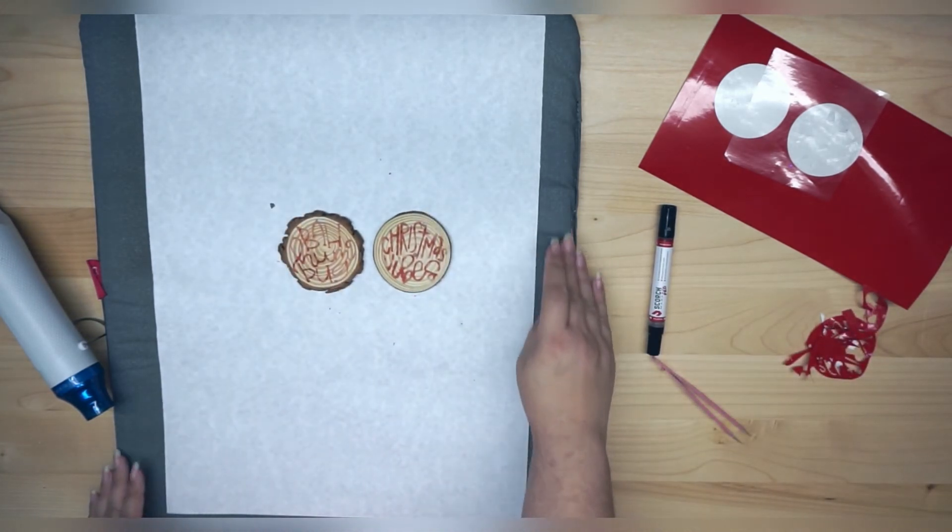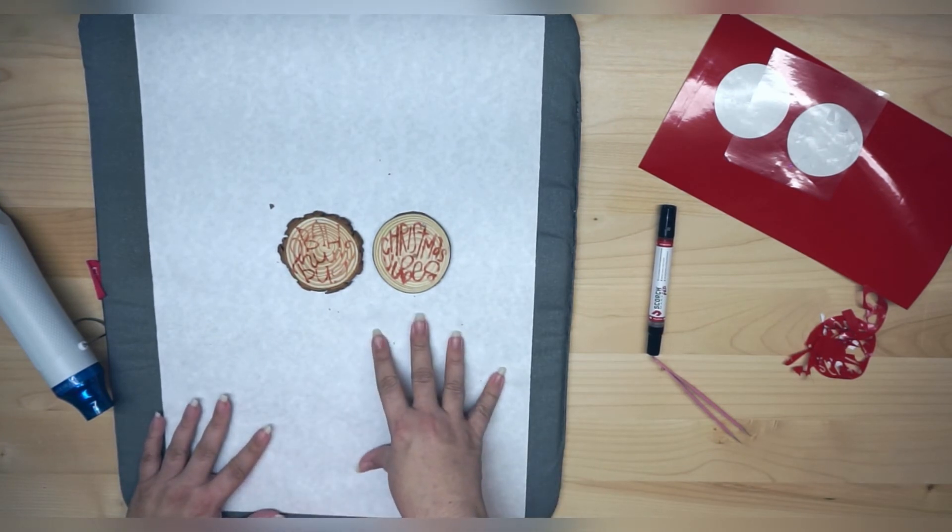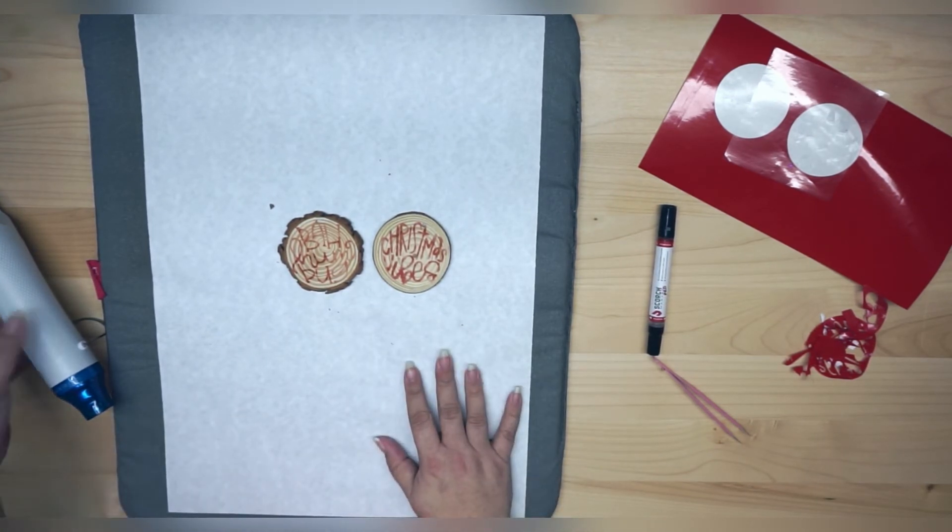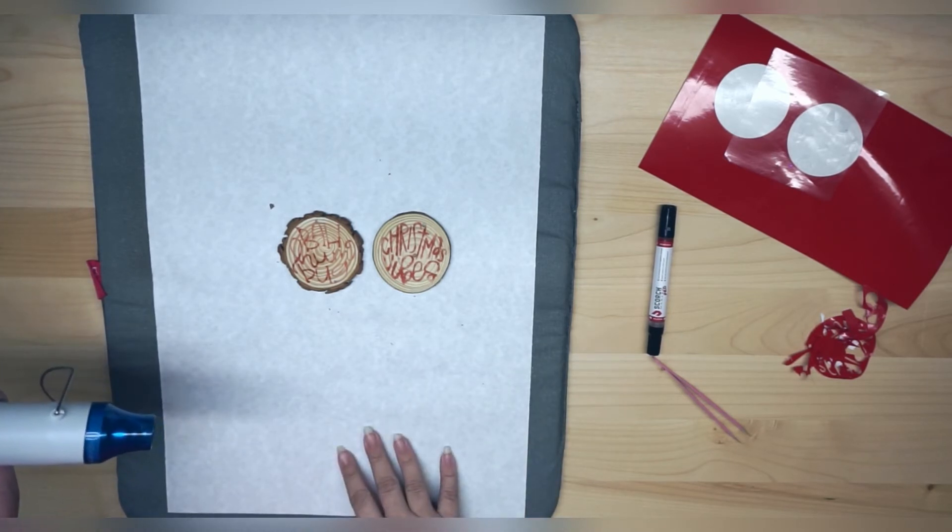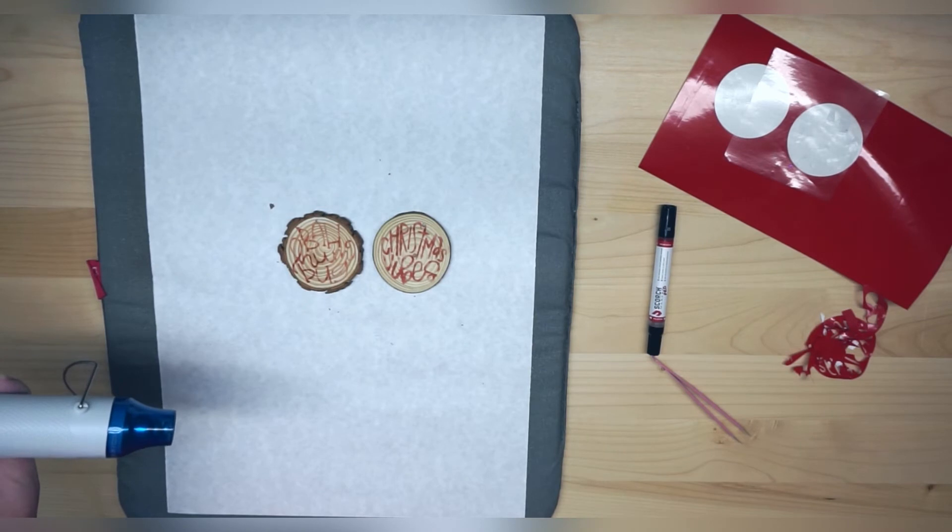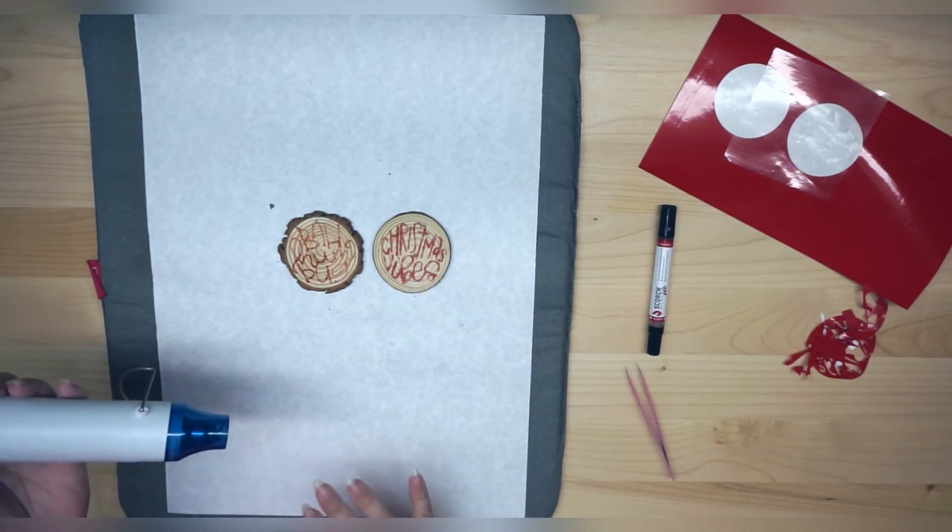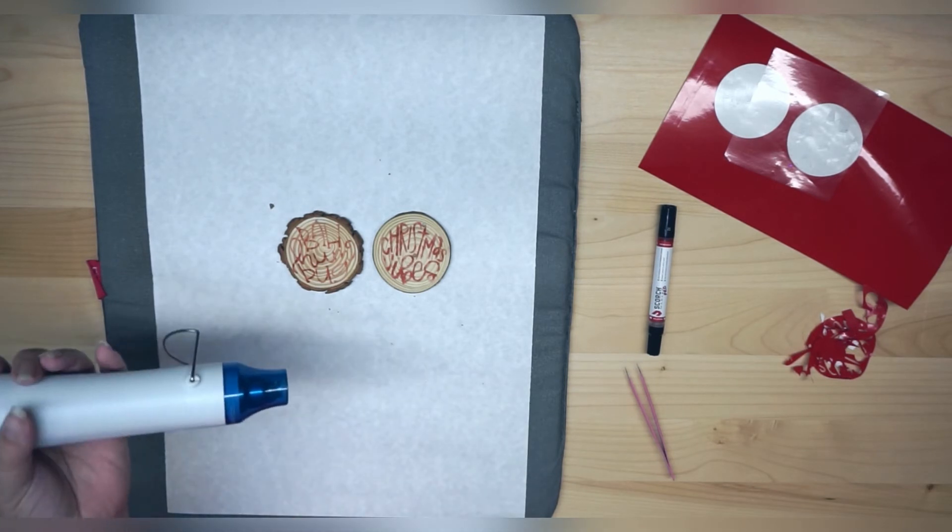All right, now I do have a heat safe mat underneath me, and butcher paper. I just... butcher paper is kind of one of my go-to things to protect my area. But because I'm applying heat, number one, I want to make sure I keep my hand out of the way. I can use my tweezers if I need something. So I'm going to keep my hand out of the way, and make sure I protect my work area.